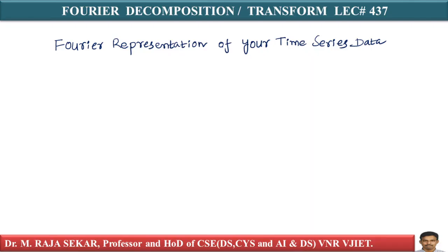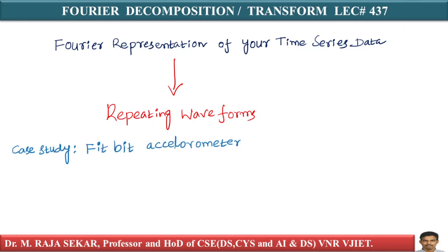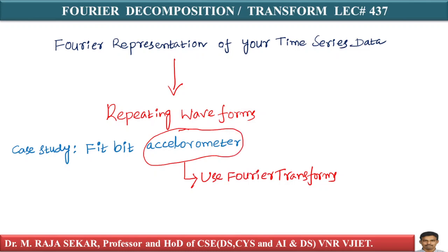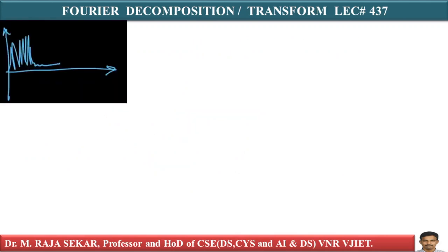This type of representation is called the Fourier representation of your time series data. Fourier featurization is very important when you have repeating waveforms, especially like heart rates, where frequency of repetition is important. We have a case study where we use Fitbit accelerometer data — Fitbit is a smart watch device with an accelerometer, gyroscope, and other sensors to track your movement every day.